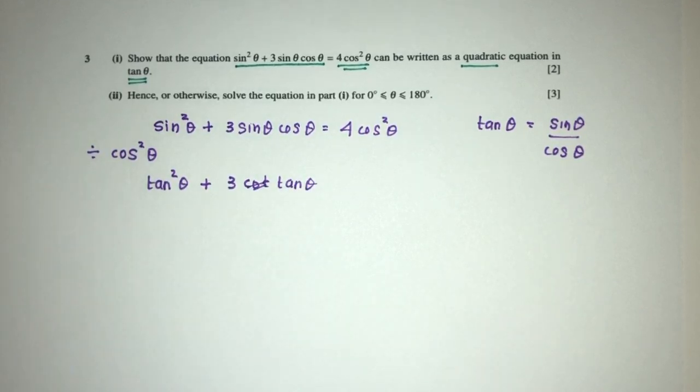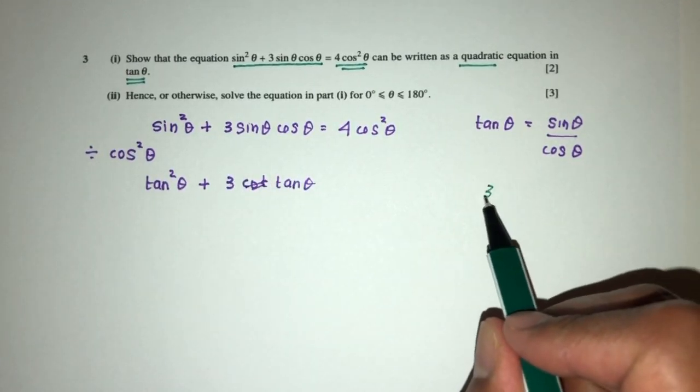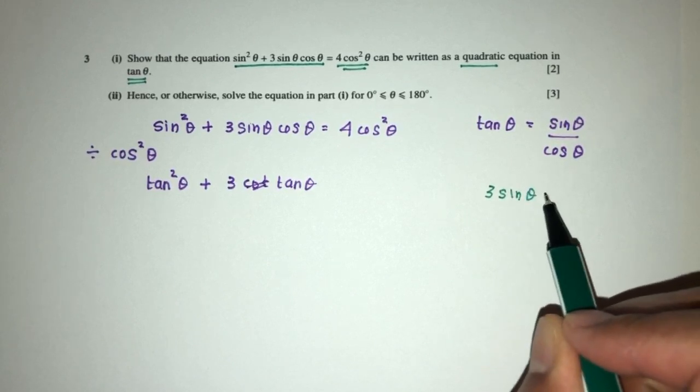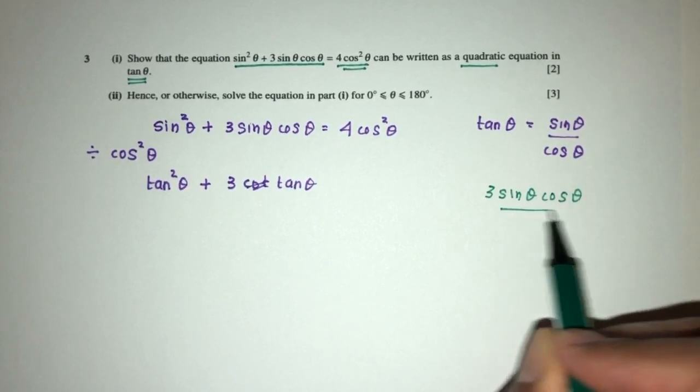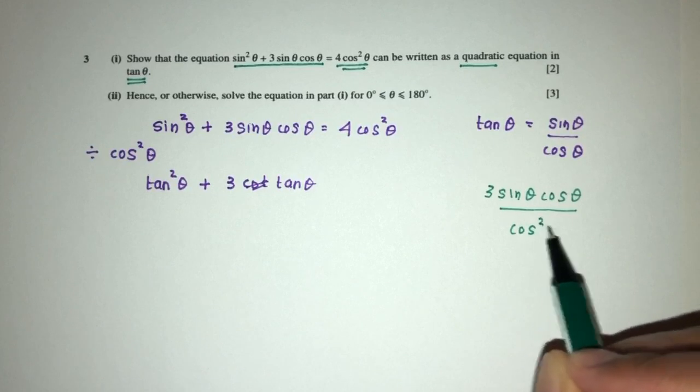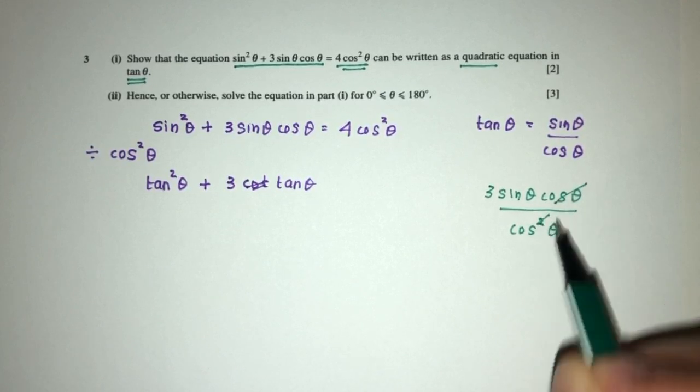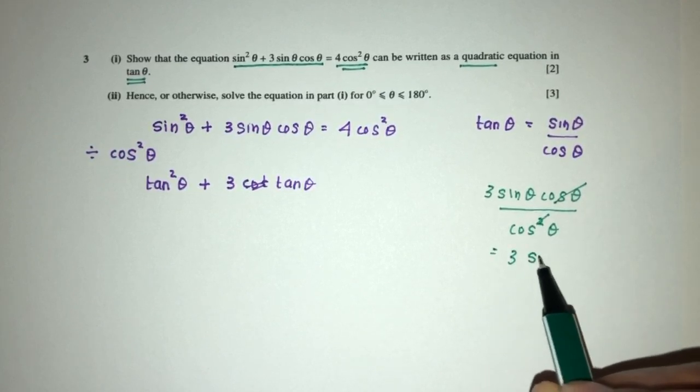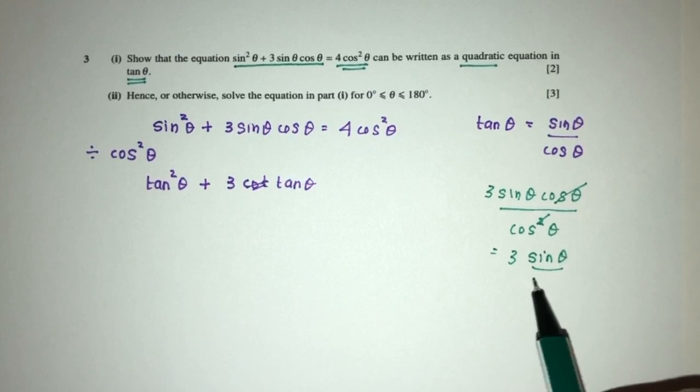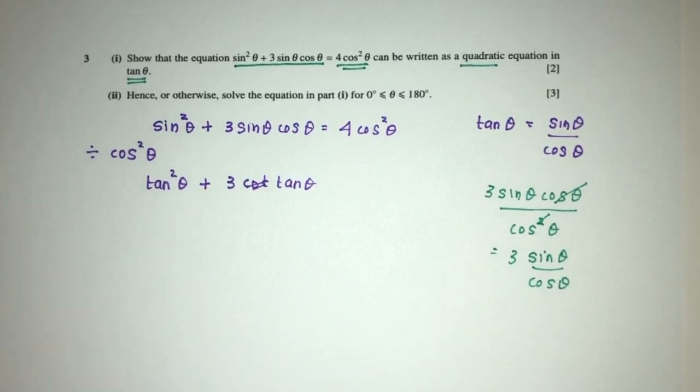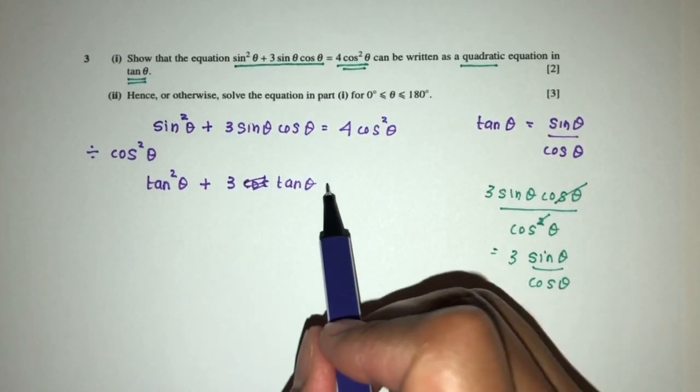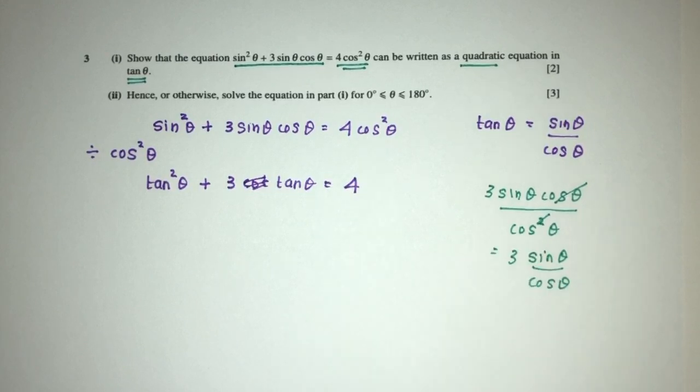Let me re-explain, sorry for confusing you. So here you will have 3sinθ over cosθ divided by cos²θ. This will cancel out, so you will have 3sinθ over cosθ, which is simply 3tan θ. And then finally this will be just 1, which is 4.